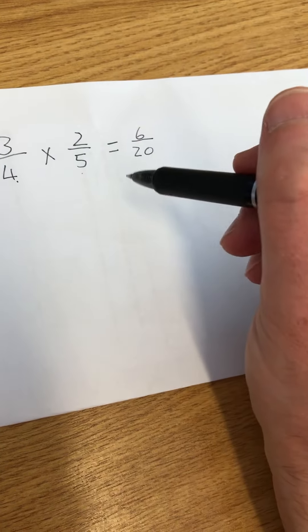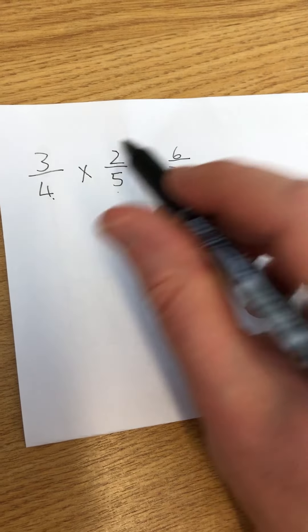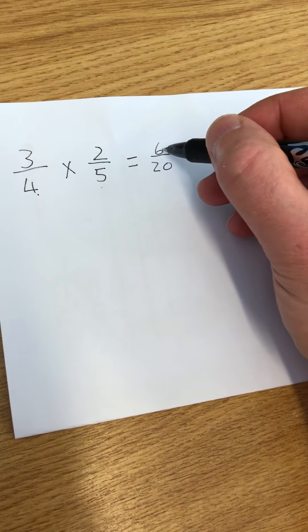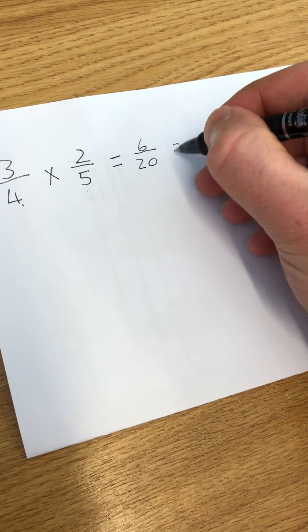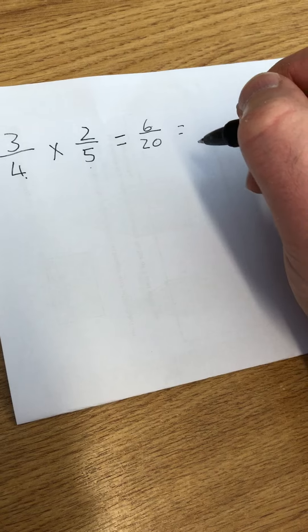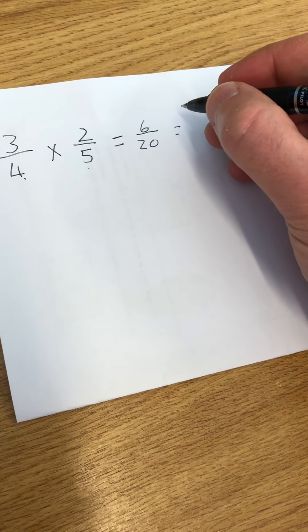No need to find common denominators or work anything else out, it's as simple as that. But what I can do, I've got 6/20 there, haven't I? Both of those are even numbers, so I can divide them by 2.